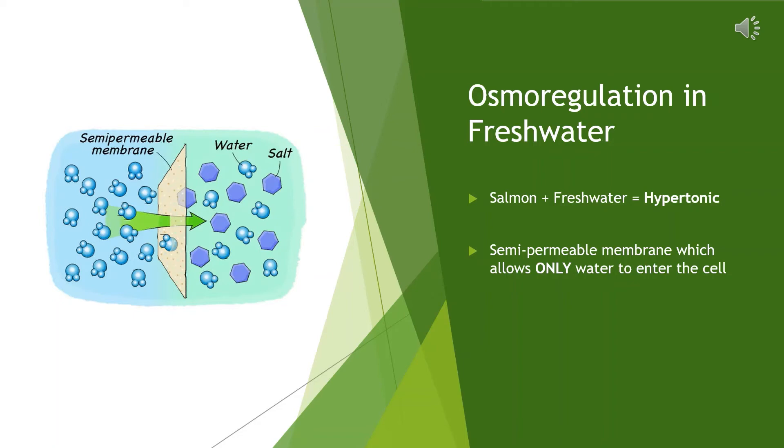In theory, if this was not the case, during osmosis the cell would absorb too much of the solute and the stress would cause the cell to burst. Salmon cells have a semi-permeable membrane which allows water to move into the cell. The membrane is permeable only to water.